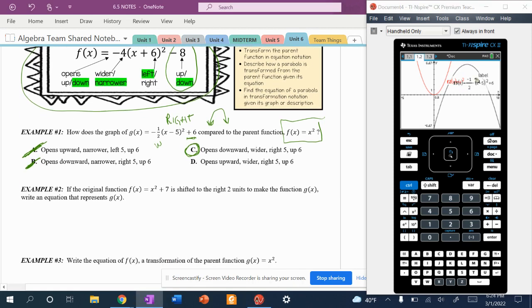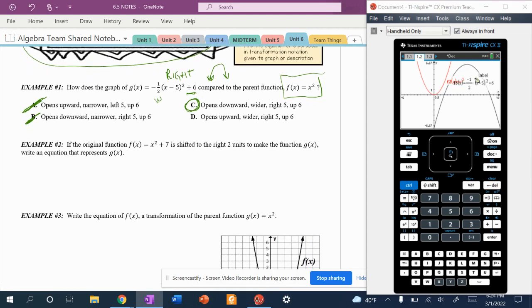All right. Let's look at example two. Let's look at another example. It says if the original function x² + 7 is shifted to the right. All right. So it's shifted to the right. I like to underline or highlight these things to make the function G(x). Write an equation that represents G(x). Oh, well, this is nice because it only has one transformation, right? So let's write our G(x).